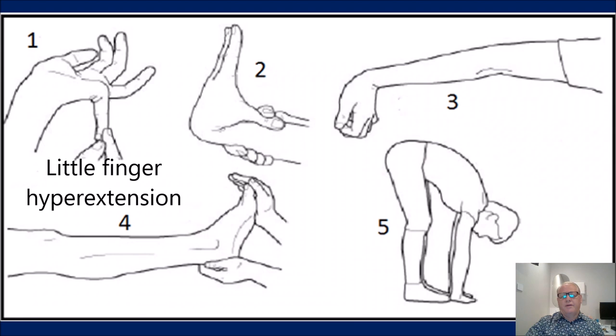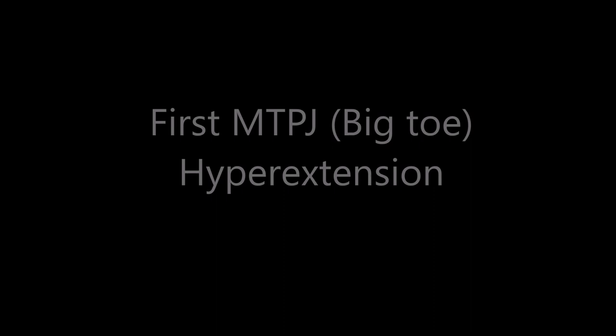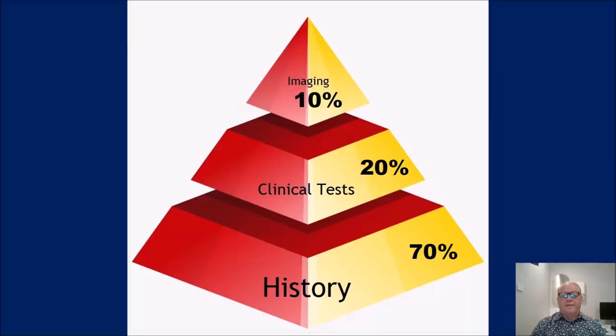The Beighton tests are: can the finger go beyond 90 degrees, the thumb coming to the forearm, hyperextension beyond 10 degrees of wrist extension, the foot — the MTP joint — and being able to flex forward and put the hands on the floor.